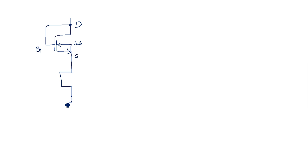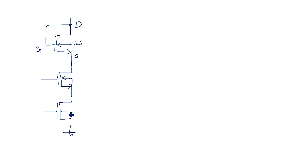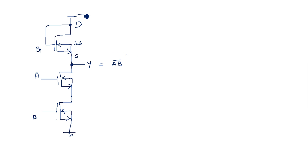In the pull-down there must be two transistors in series for product realization. This is the gate terminal; source and substrate must be connected together. This is input A and this is input B. The output Y is equal to AB bar. This is connected to plus VDD, which we can say is plus 5 volts.